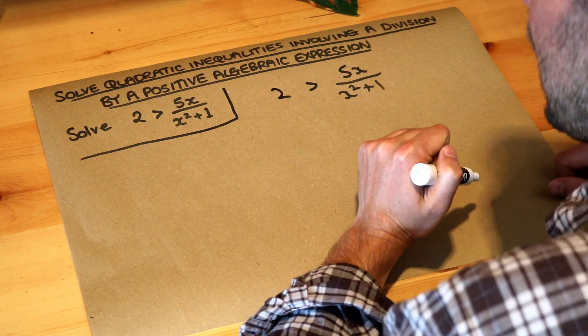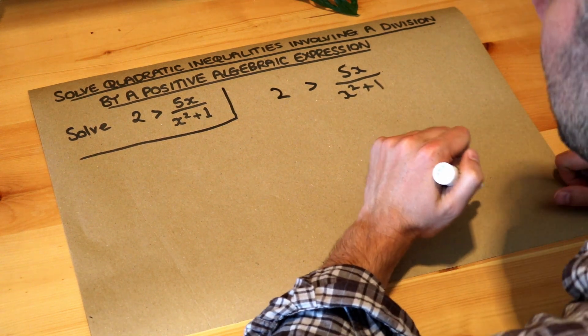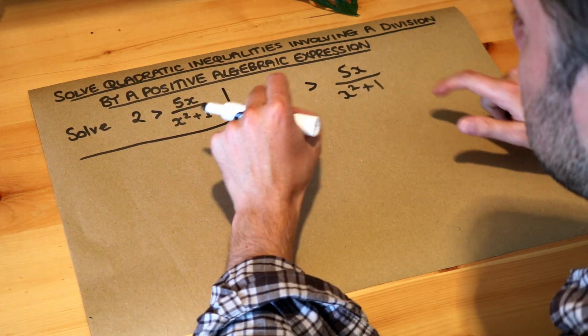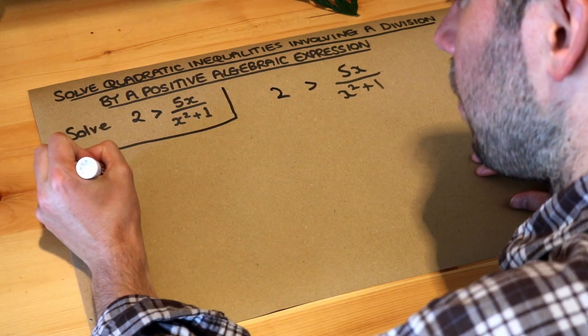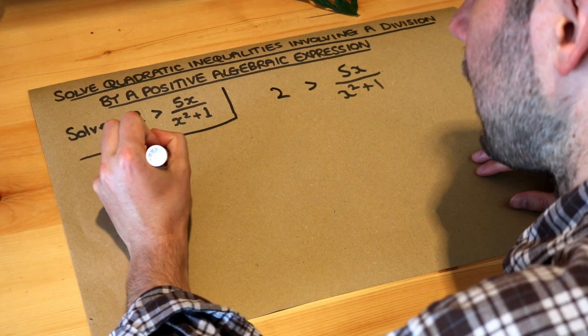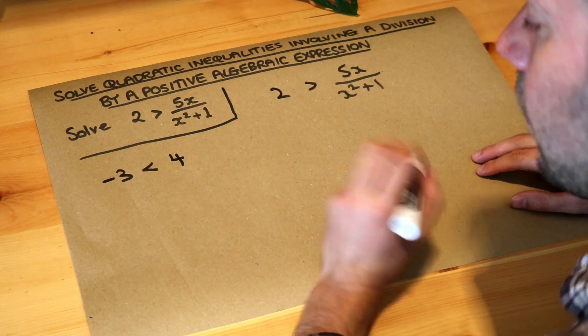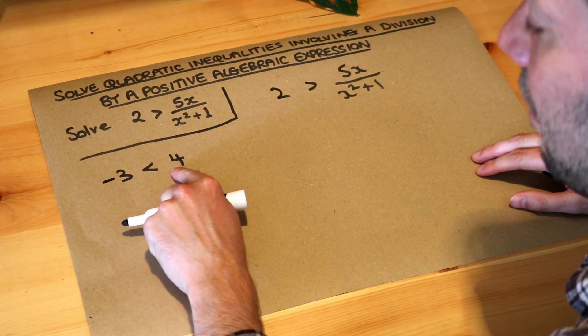Now you do have to be slightly careful with inequalities because if you multiply both sides by a negative number it actually reverses the direction. For example, if I had say that minus three is less than four, that's clearly true, negative three is less than four, isn't it?